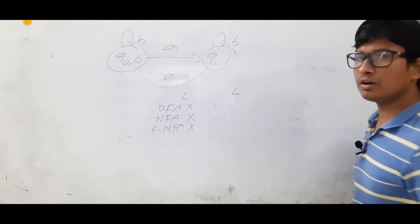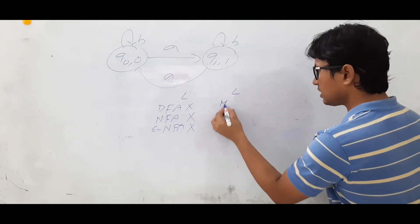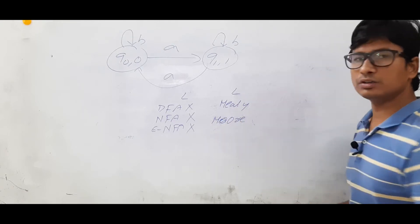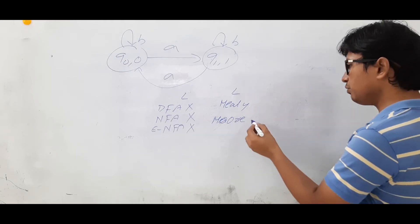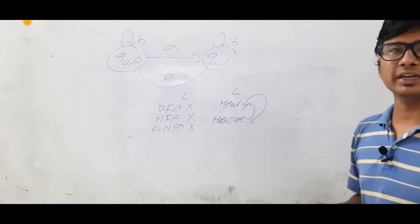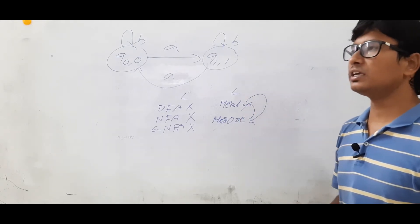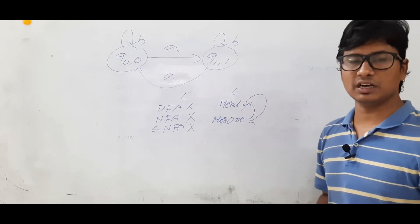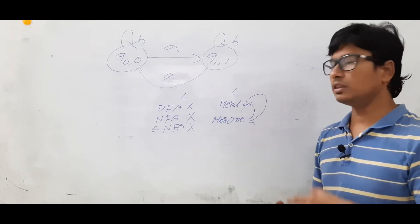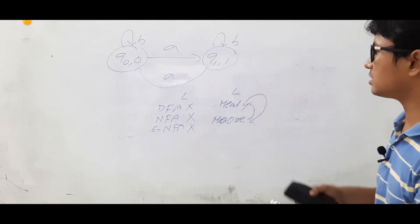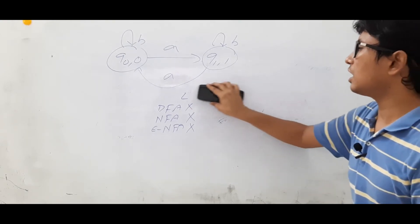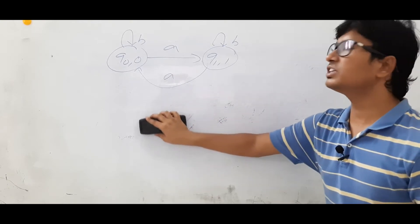Similarly, for any language if you can construct a Mealy machine then you can easily construct a Moore machine also. And we have a conversion from Moore machine to Mealy machine and Mealy machine to Moore machine. So I can say that the capability or the power of both these machines are the same. This is a very important point — the power or the capability of both these machines are the same.